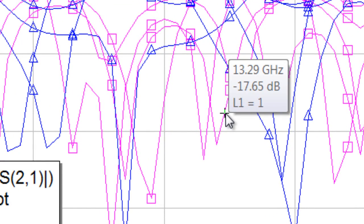Besides getting the X and Y values of that point, you'll notice it gives us the swept value of the parameter. In this case, L1, the length of the stub, is equal to 1.